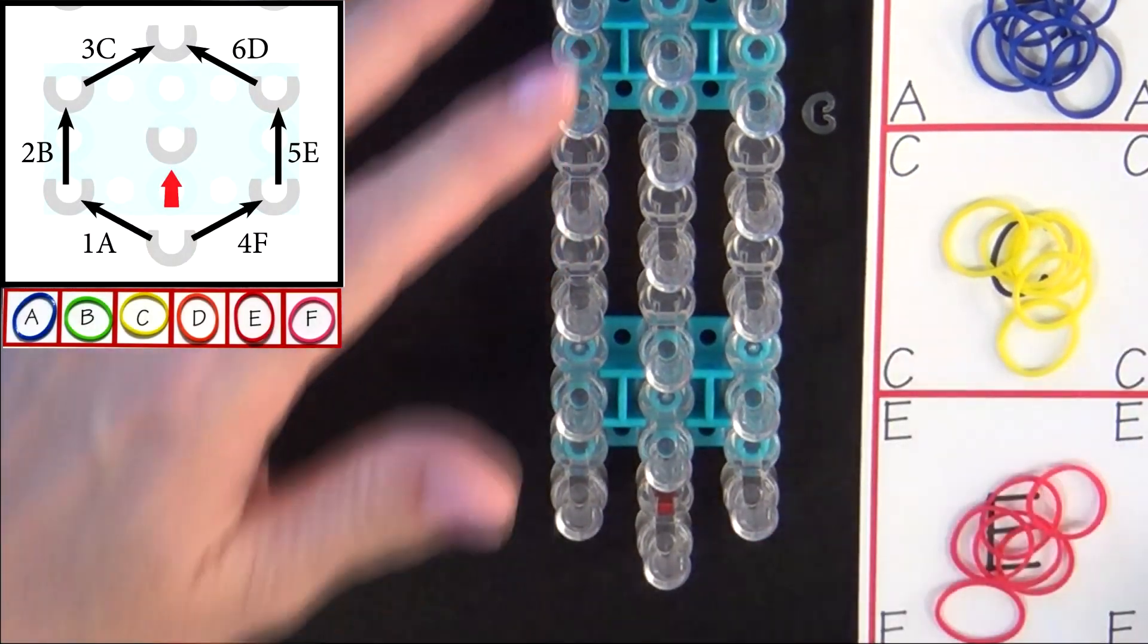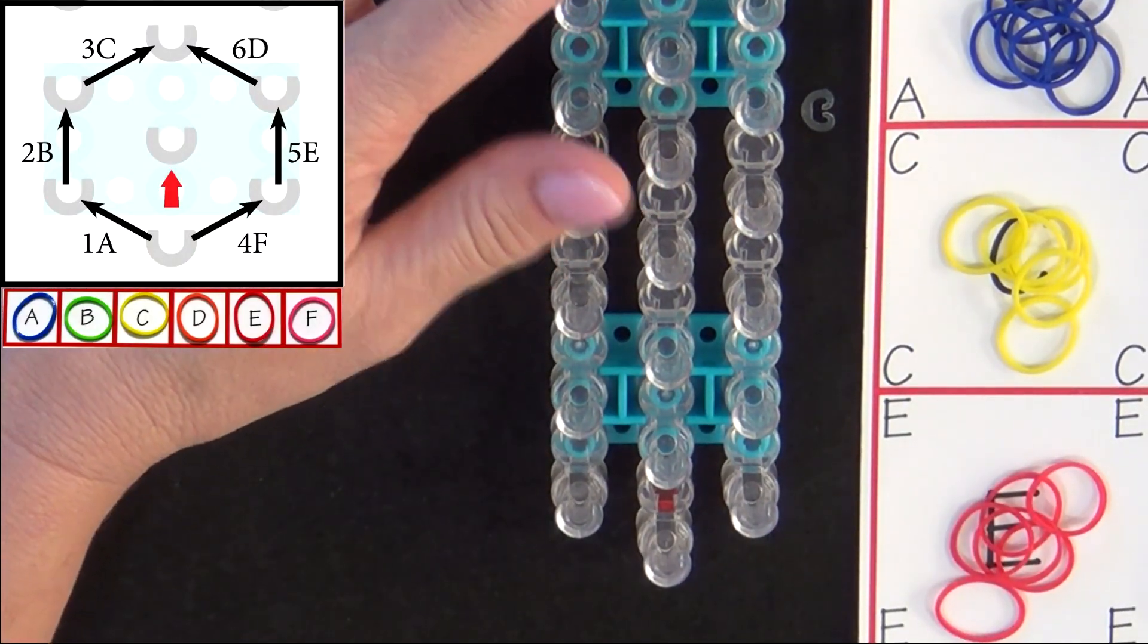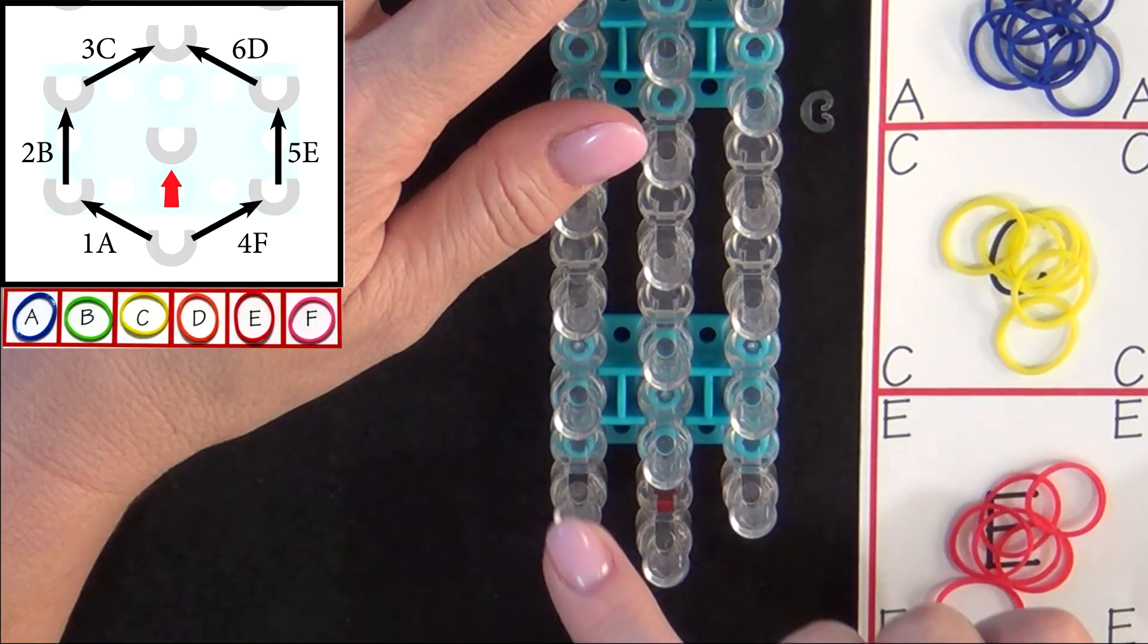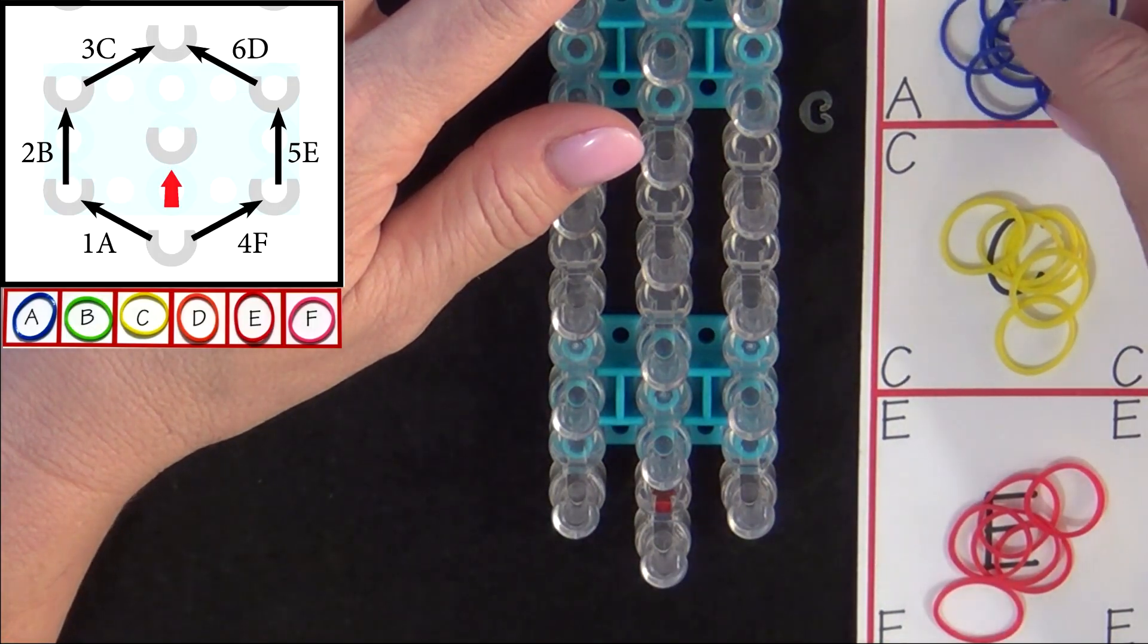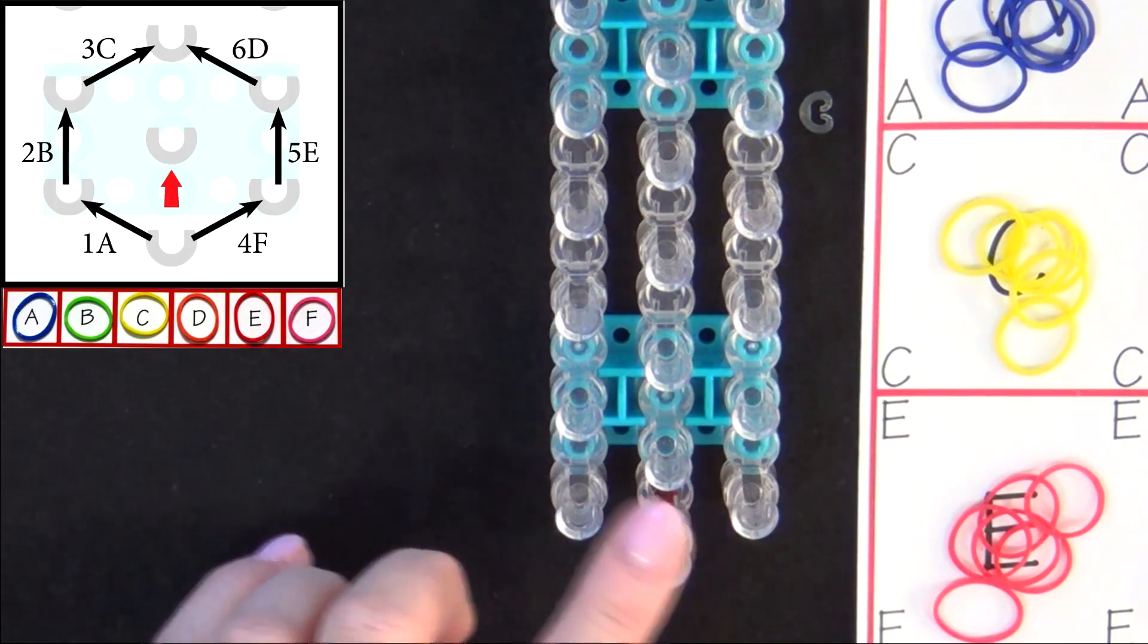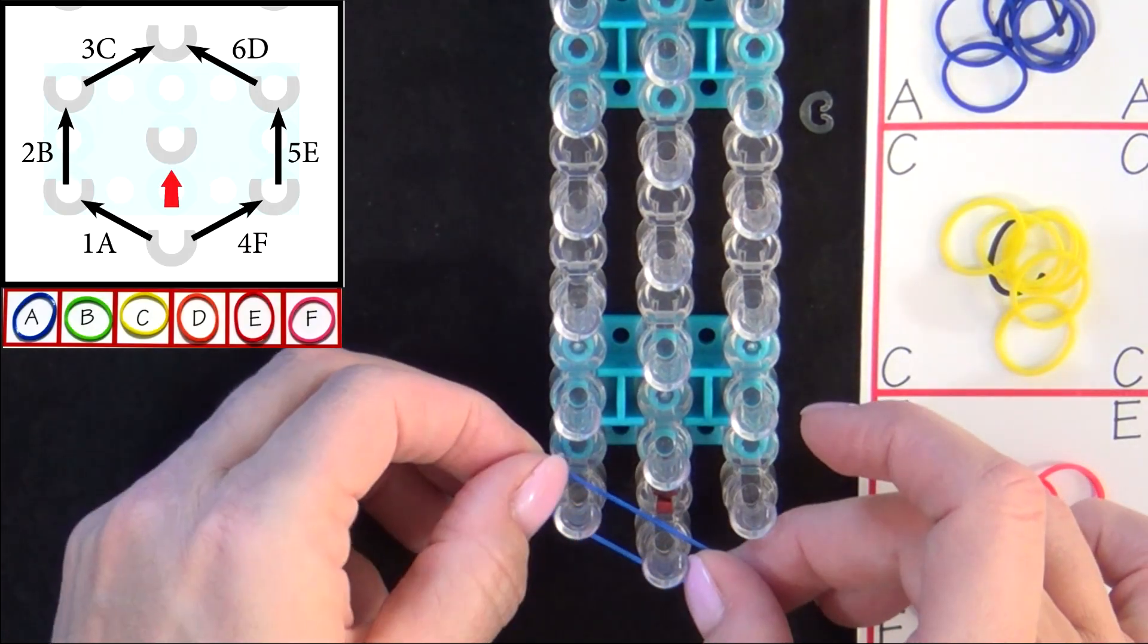Refer to the diagram on your screen to place the first 6 bands on your loom. You'll be forming a hexagon. You'll start from the middle pin. And the first band that you place will be 1A. You'll be using your A colored band.